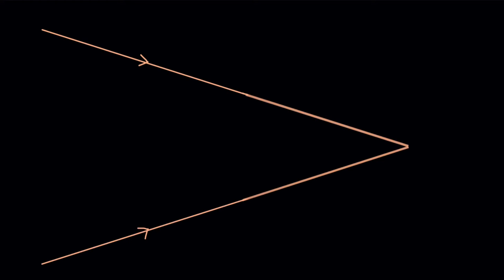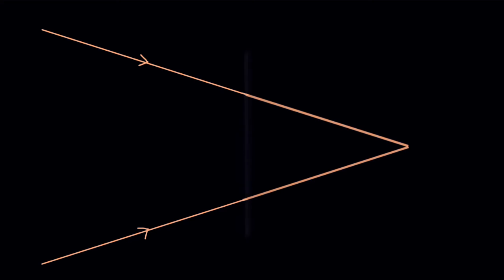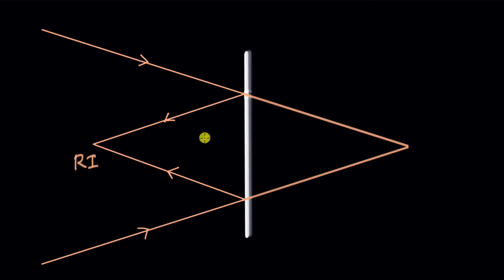Let's start with some converging rays. These rays can meet at a point and form a real image, but if we introduce any optical element in between like a mirror or a lens — let's say we introduce a mirror — then these rays will get reflected and instead of meeting at this point they will meet somewhere over here. We have a real image forming at this point and no rays are passing through the mirror.